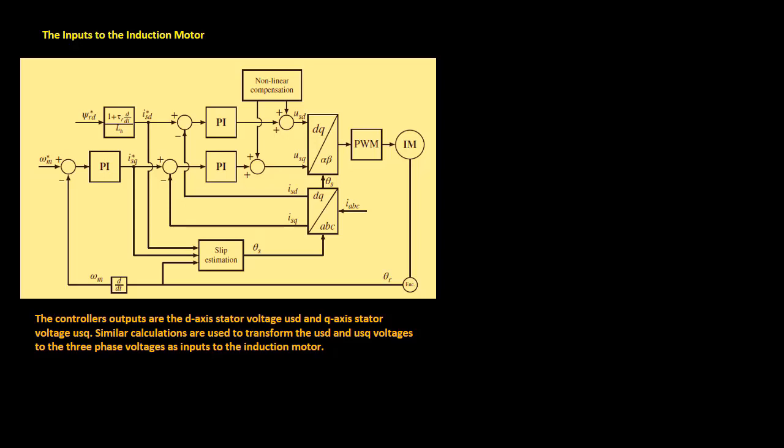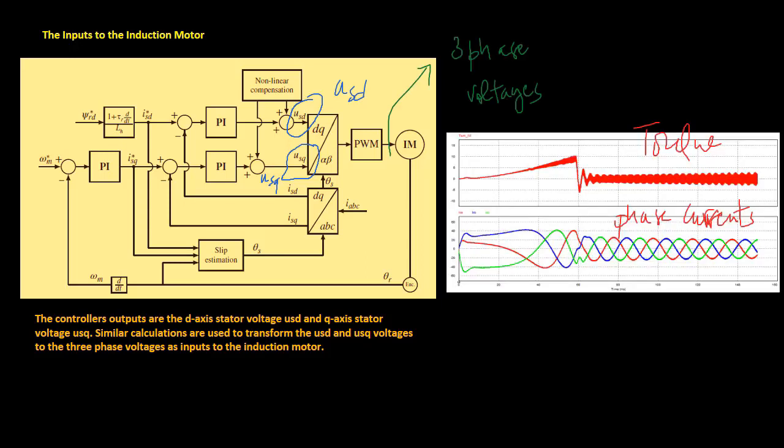The controller's outputs are the d-axis stator voltage usd and q-axis stator voltage usq. Similar calculations are used to transform the usd and usq voltages to the three-phase voltages as inputs to the induction motor.